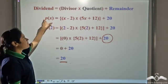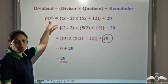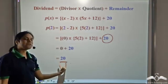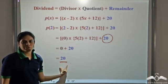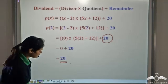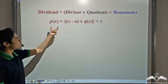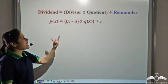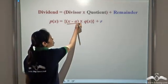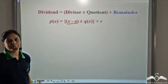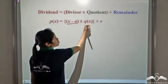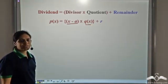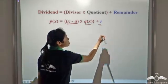So P(2) gives us the remainder of this division. If we divide a polynomial by x minus 2, P(2) gives us the remainder. Let us generalize this: if we have a polynomial P(x) and we divide it by a linear divisor x minus a, say we get the quotient as Q(x) and the remainder is r.